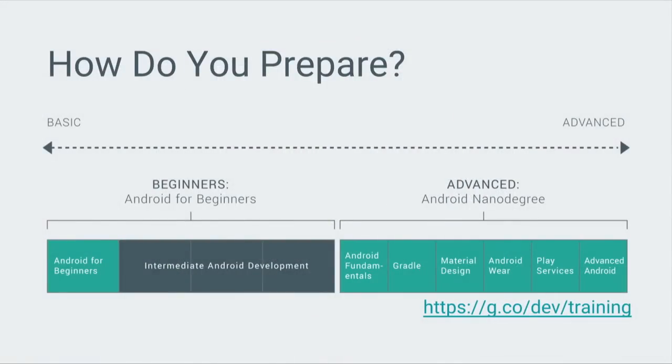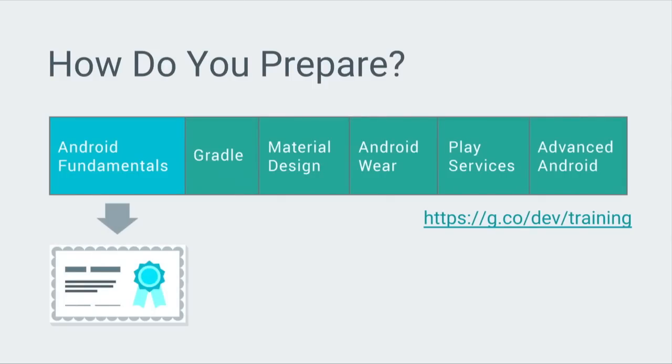How do you prepare? We're coming back to that landscape of Android training developed over the last few years. This is more on the intermediate to advanced side. The Android Fundamentals course is the one to dive into — it maps closest to the job task analysis we performed. By taking that course, you can really get ready for the exam. Taking that course also means doing all the practical parts — it's not just watching the video, but actually getting your hands dirty, building the projects, and really mastering that material. That's the best place to start today.